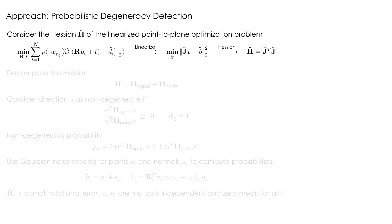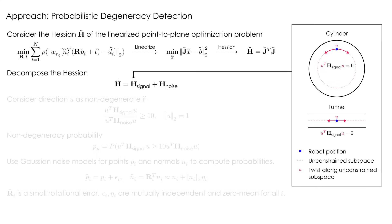The degeneracy detection method considers the noise entering the Hessian of the linearized point-to-plane optimization problem. The Hessian can be decomposed into a signal component and a noise component. Noise dominates the signal in degenerate directions. We therefore require the signal to be at least an order of magnitude higher than the noise for direction u to be considered non-degenerate.